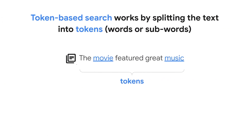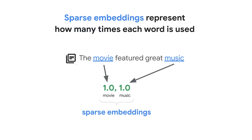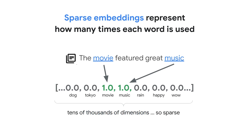Let's take a look at how keyword search works with Vertex AI Vector Search. The keyword search is called token-based search, because it works by splitting the text into individual units called tokens, which can be words or subwords. These tokens are then used to create a vector called sparse embedding — think of it as a long list that shows how many times each word or subword appears in the text. The sparse embeddings generally don't consider the meaning of words; they merely represent the frequency of each word's appearance. Since there can be thousands of different words in a text, the embedding can have tens of thousands of dimensions.